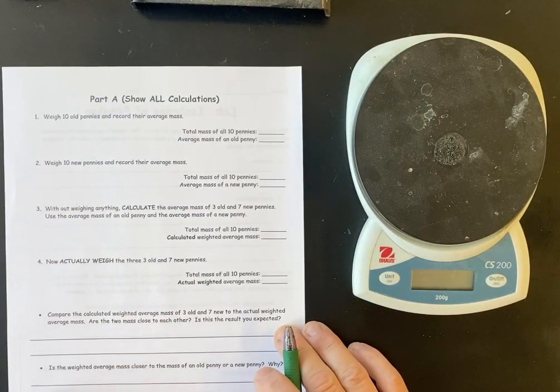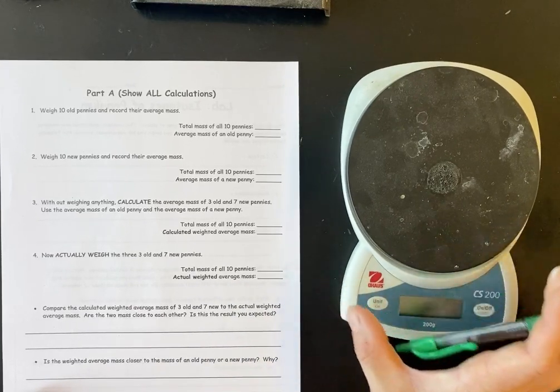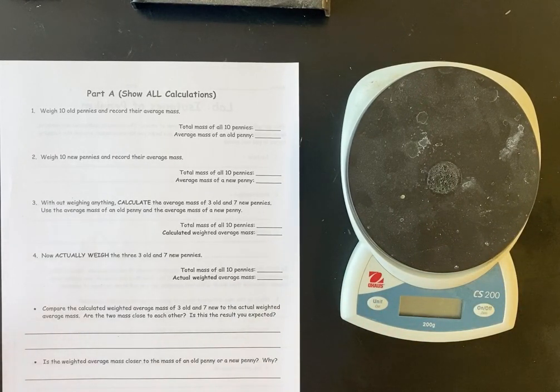Now, for the lab, part A. Part A is pretty simple. You're going to have to figure out the average weight of an old penny, the average weight of a new penny. It's not that hard. So here's what's going to happen.